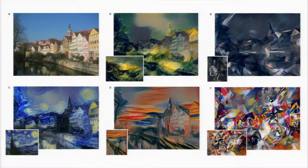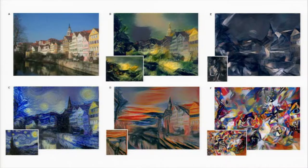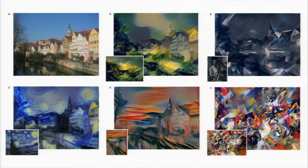Style transfer is another beautiful recent example where you have an input photograph, and a different work of art in the lower left is used to set a style that's then transferred via deep neural networks to the input image. You can see this wild variation in style while some underlying aspects of the content are preserved — you've seen this in popular apps like Prisma.